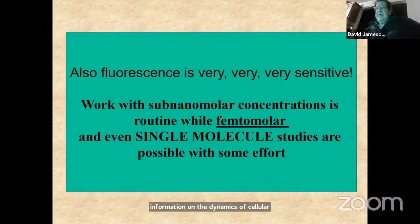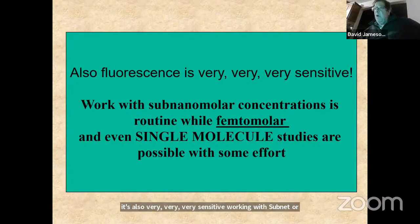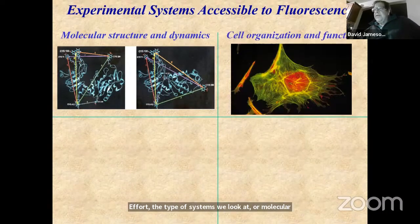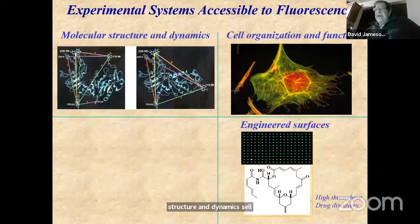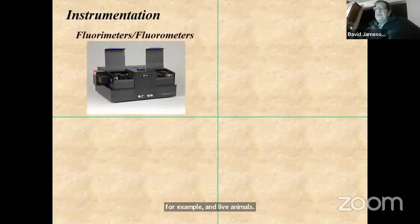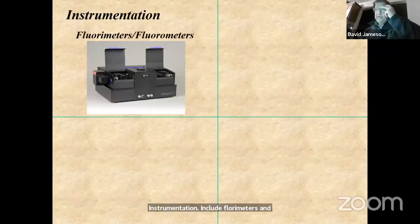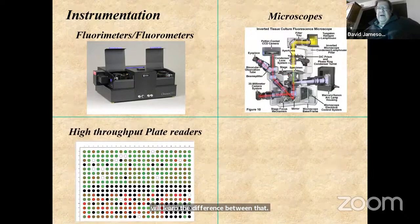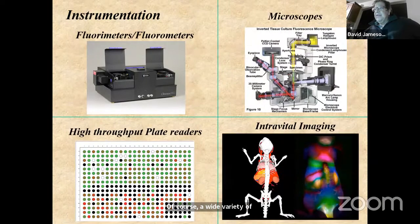Fluorescence is also very sensitive. Working with subnanomolar concentrations is routine, where femtomolar or even single molecule studies are possible with some effort. The types of systems we look at are molecular structure and dynamics, cell organization and function, engineered surfaces for high throughput drug discovery, and live animals. Instrumentation includes fluorometers and spectrofluorometers — we'll learn the difference — as well as a wide variety of microscopes, high throughput plate readers, and intravital imaging.